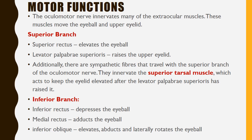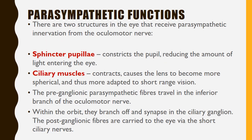The general somatic efferent fibers supply the extraocular muscles for movement of the eyeball and the upper eyelid. The superior branch, supplying the superior rectus, elevates the eyeball; the levator palpebrae superioris raises the upper eyelid. Sympathetic fibers traveling with the superior branch innervate the superior tarsal muscle, keeping the eyelid elevated. The inferior branch, supplying the inferior rectus, depresses the eyeball; the medial rectus adducts it; and the inferior oblique elevates, abducts, and laterally rotates the eyeball.